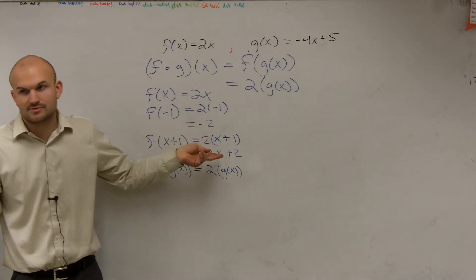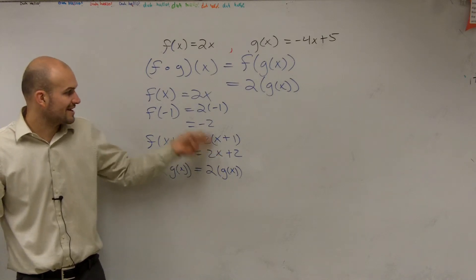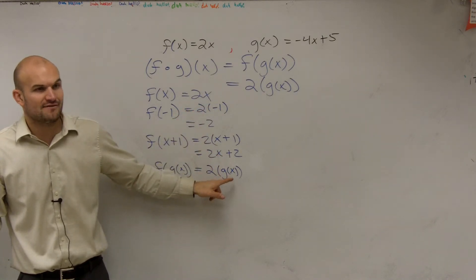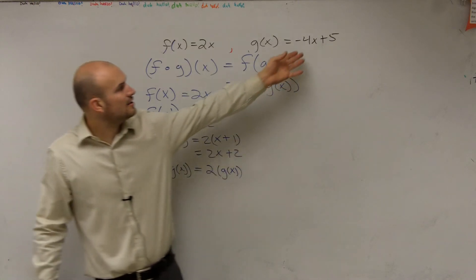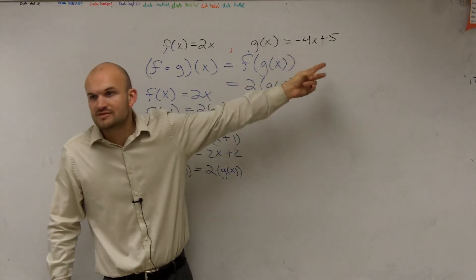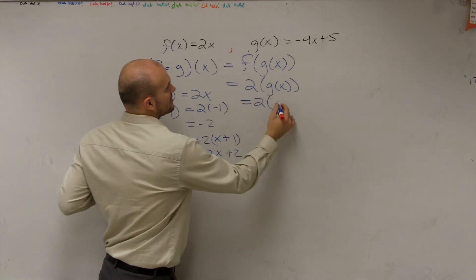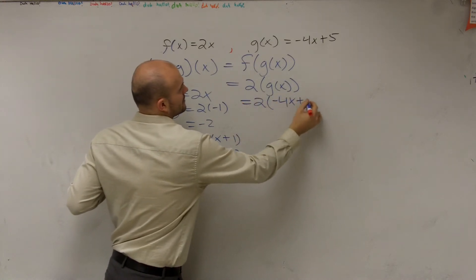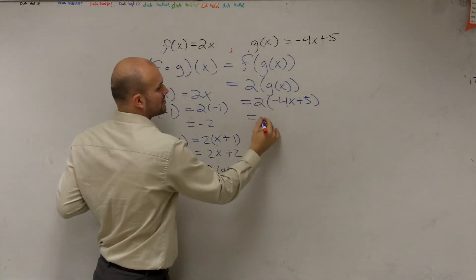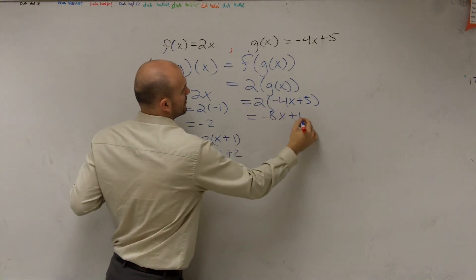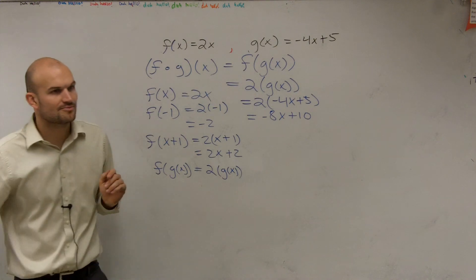Now here, we didn't know what x was. We don't know the value of x. Here, we know the value of negative 1. But here, do we have a value for g of x? Yeah, g of x is negative 4x plus 5. So therefore, what this equals is 2 times negative 4x plus 5, which, applying distributed property, equals negative 8x plus 10.